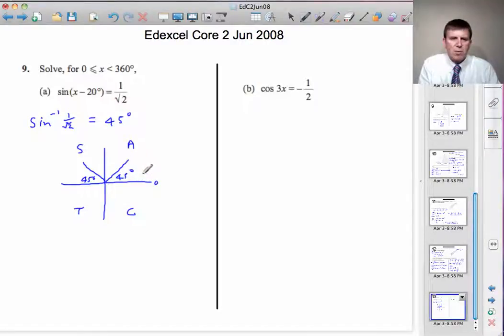And that will give us all the answers between 0 and 360. That's the first one, 45 degrees. And the second one is that angle there, always measuring from 0, anticlockwise. So, that's 180 minus 45, that 45 there. So, it'll be 135.